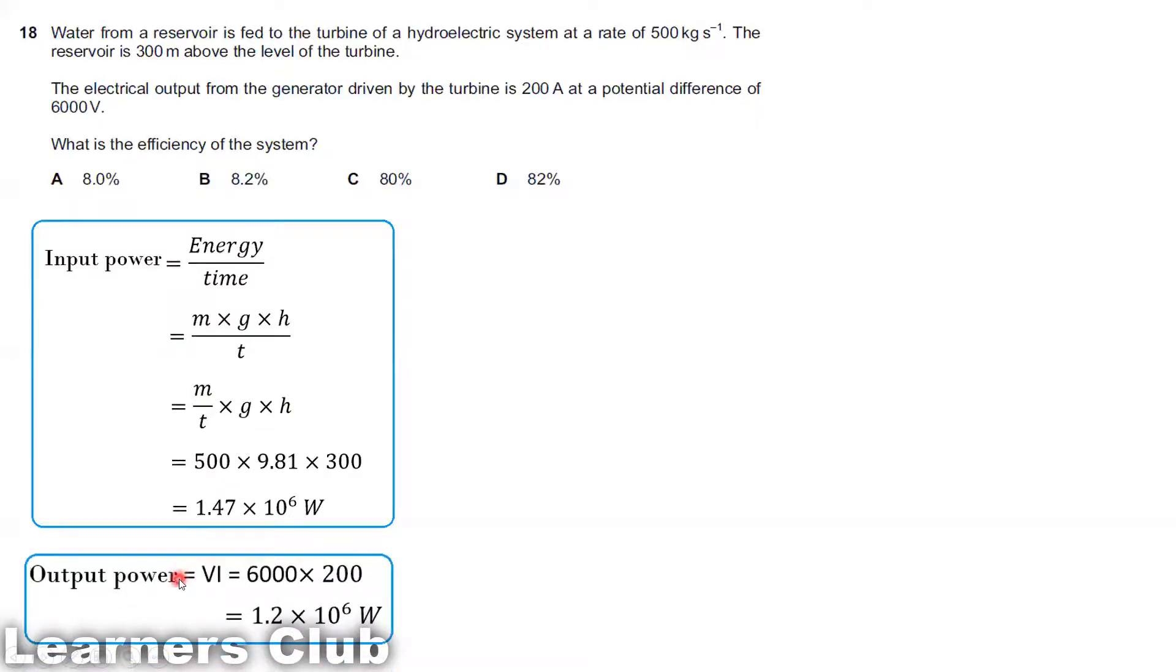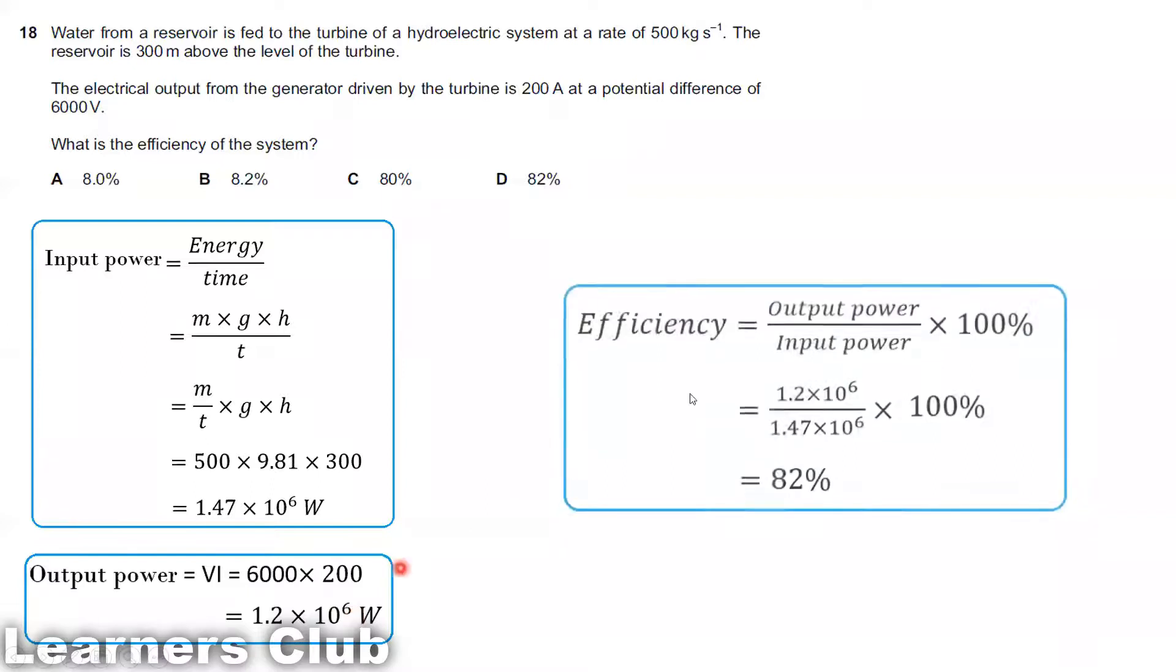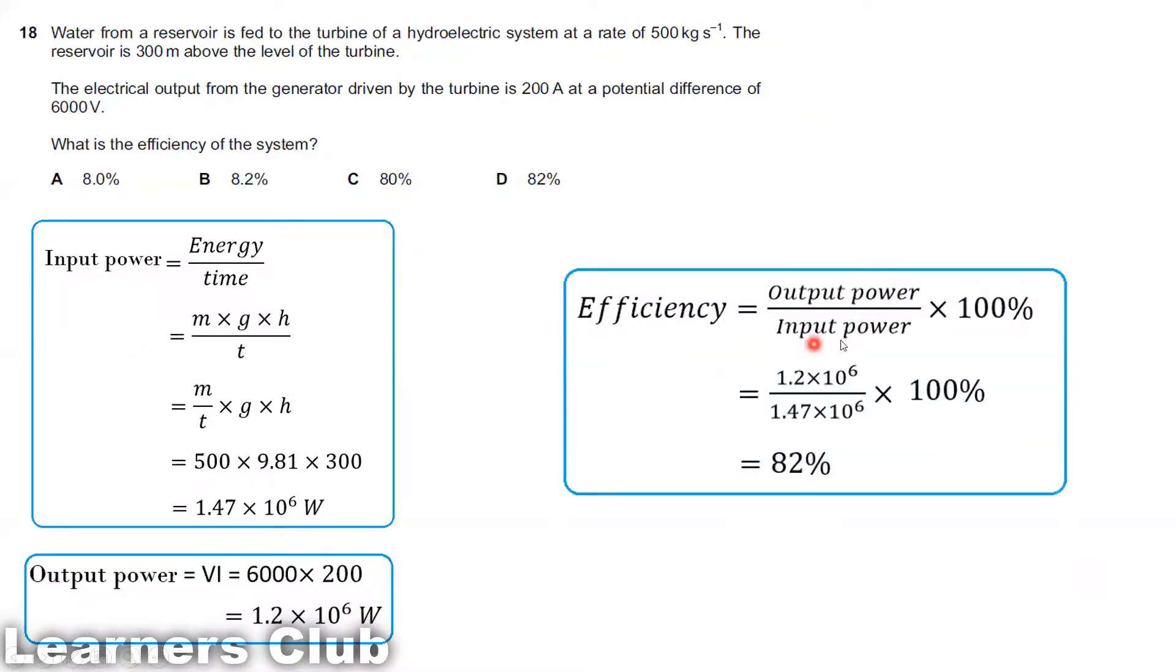Output power: The electric output from the generator is 200 amperes at a potential difference of 6000 volts. Power equals VI, so 6000 into 200 is 1.2 times 10 to the power 6. Efficiency equals output power divided by input power times 100. Doing the calculation, I'm getting 82%. So the option is B.